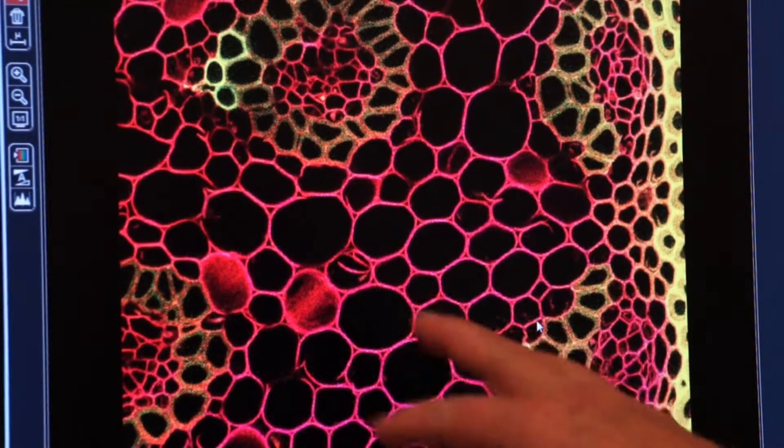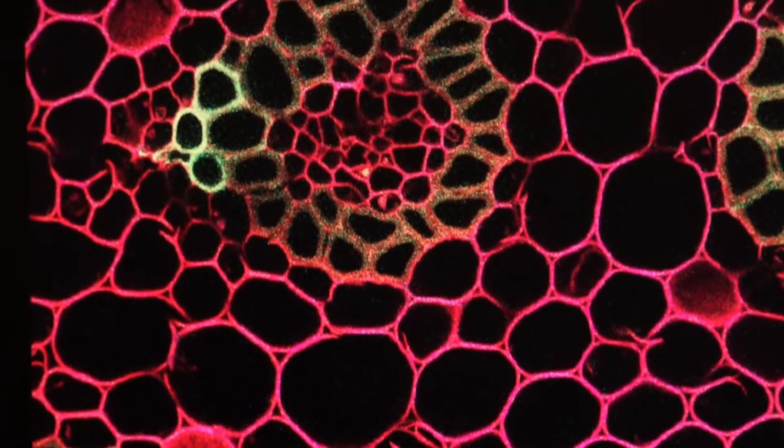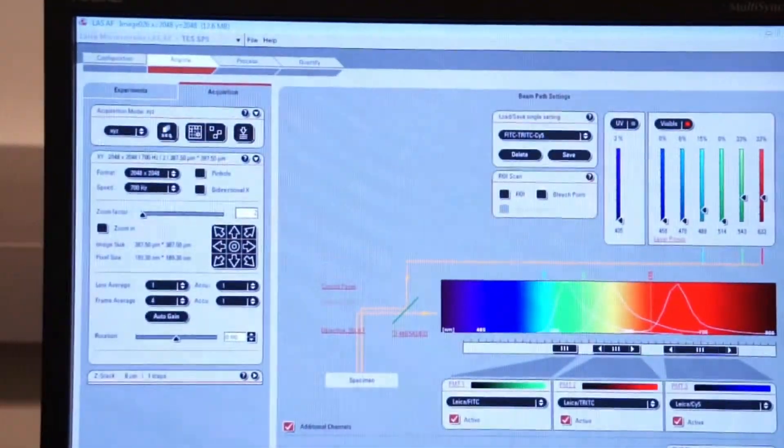Here you see on our composite image, it's still a little bit pixelated. So we can improve that by doing both frame and line averaging. I don't recommend that you do both. And if you do,